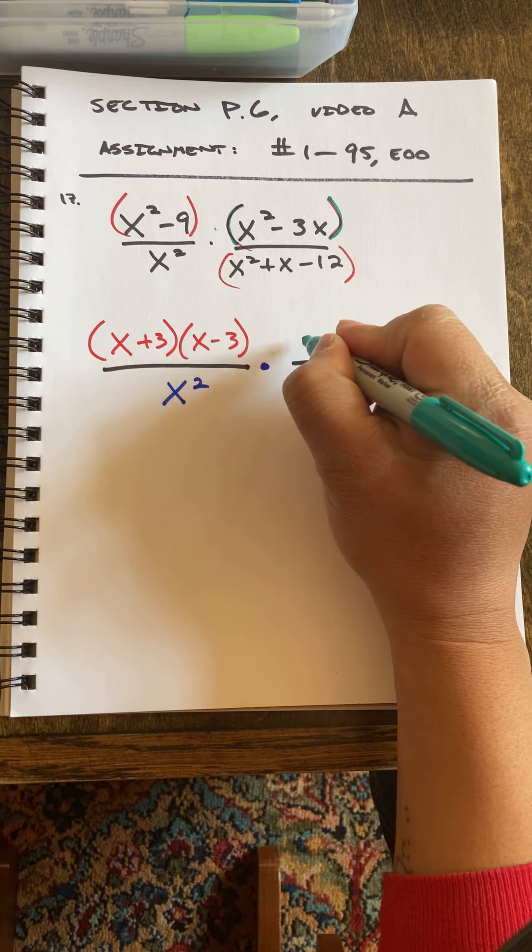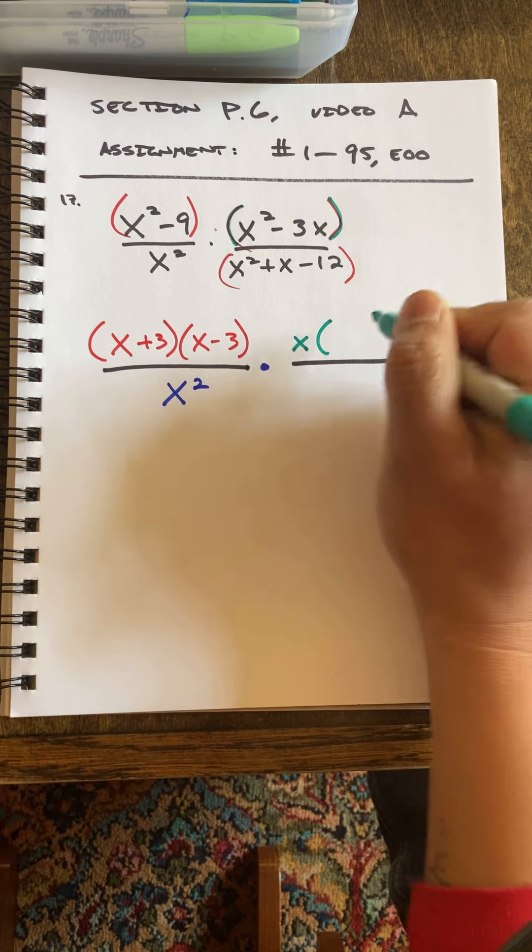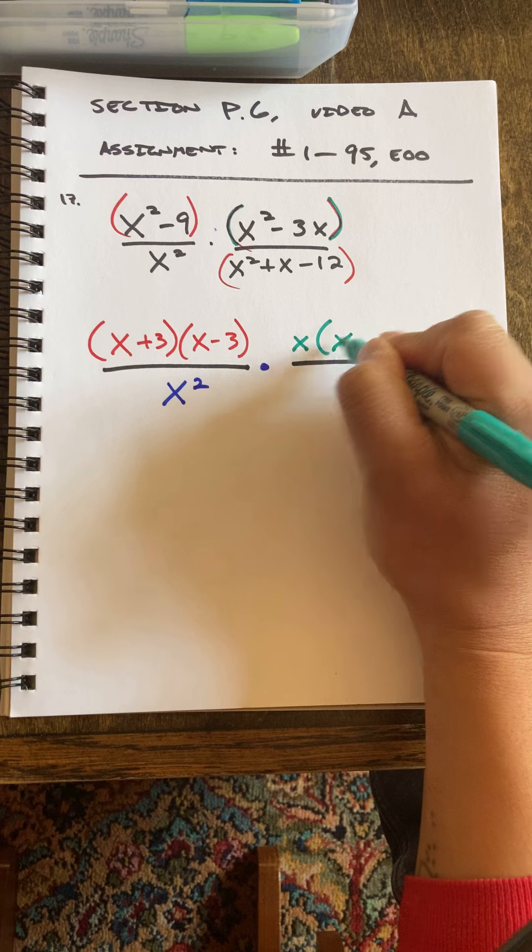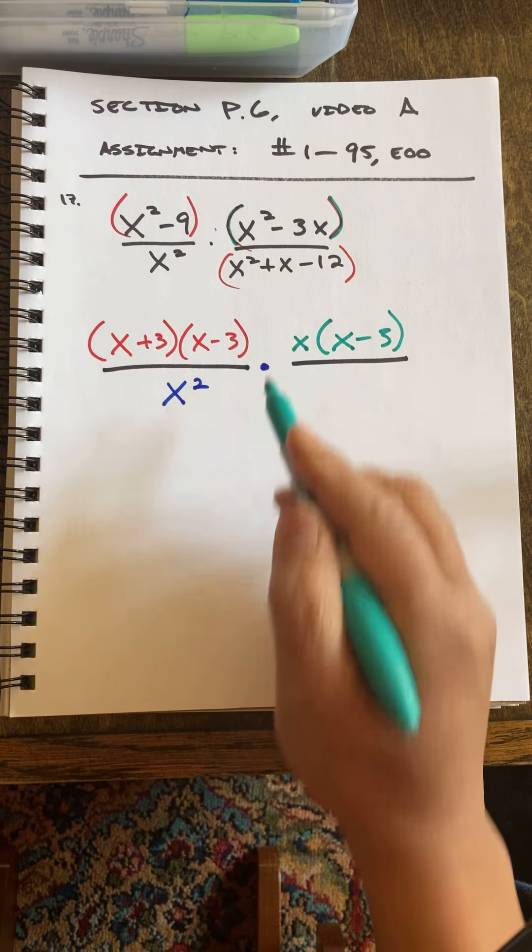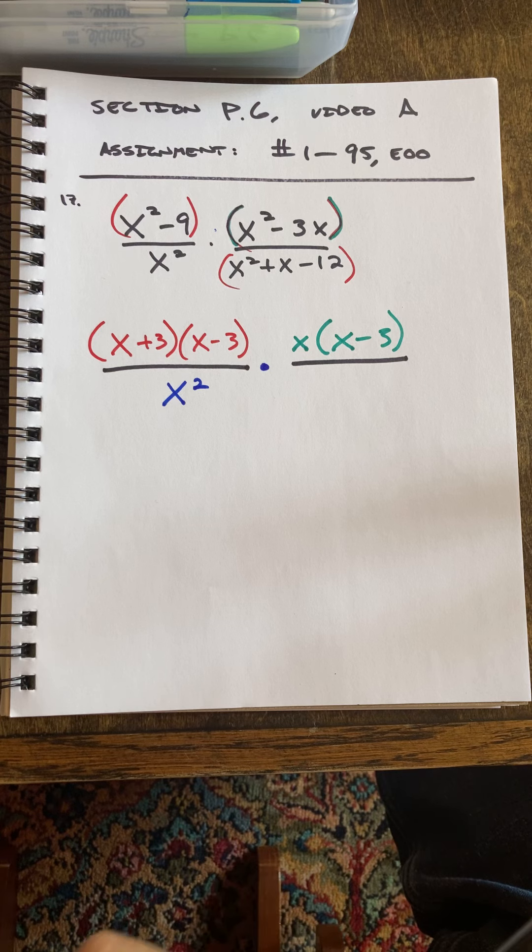I'm factoring an X out of these two terms. So I get X times X minus three. And I can see that these two are already going to cancel in the very, very near future.